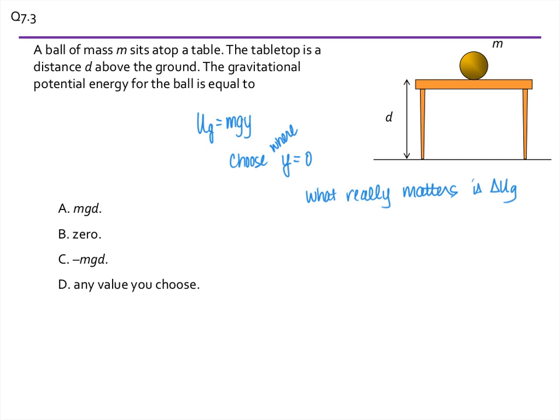And the change will be the same no matter what we choose as our reference point. So for A, for the ball on the table, the y equals zero would have been at the floor, so that then the potential energy it has on the table is mgd. Let's put it for A. For expression B, y is zero here, and that's okay.